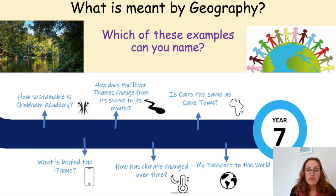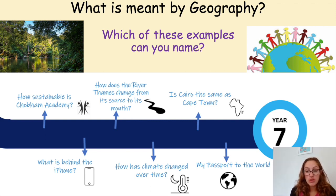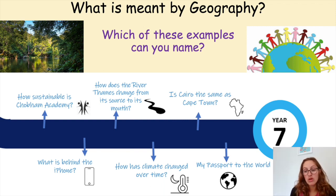Before we move on to looking at the River Thames — where does it start, where does it end, how does it influence places along its journey, what factors or processes might influence a river itself? And then we look at what is behind the iPhone, a concept called globalisation, which is to do with the spread of ideas globally, with a focus on factory workers and the supply chain of the iPhone. Before we finish with how sustainable is Chobham Academy and a fieldwork unit. The idea of the year seven geography journey is to get to grips with what geography is and the skills that we need to be a good geographer.